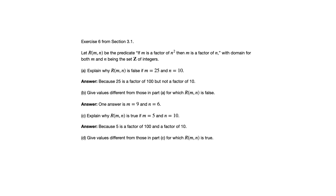For part D, it says give values different from those in part C for which R(M,N) is true. You've got a lot of options here. You can do something like part C, where M is a factor of both N squared and N. But actually, I took this route just because I wanted to remind you that conditional statements can be true in various different ways.